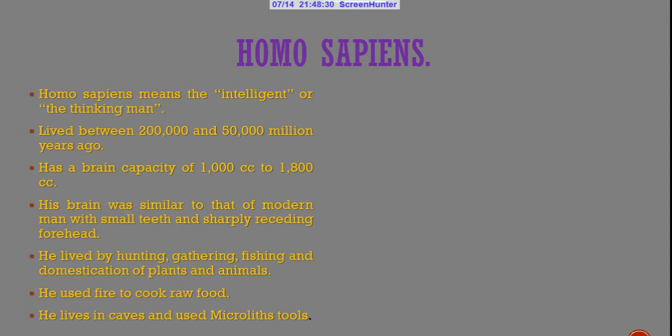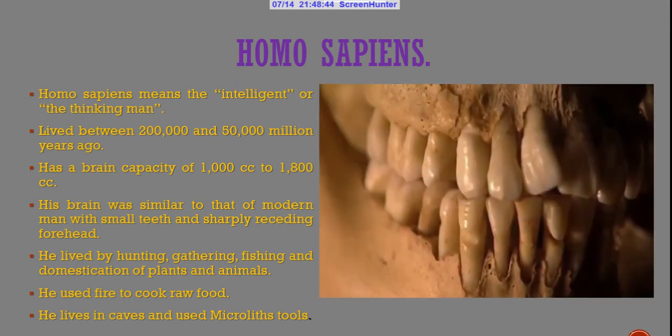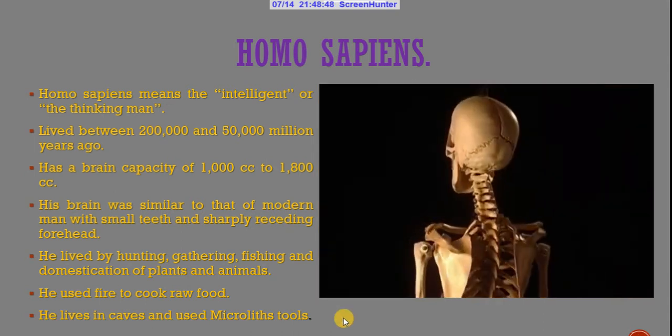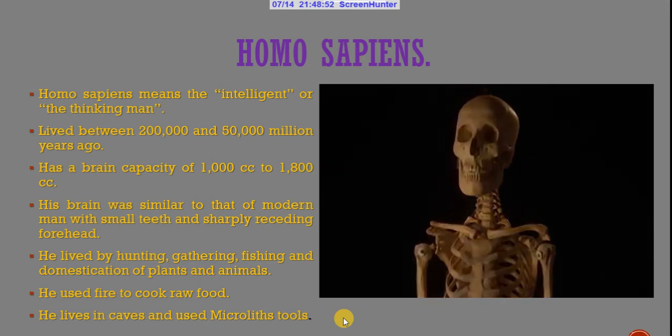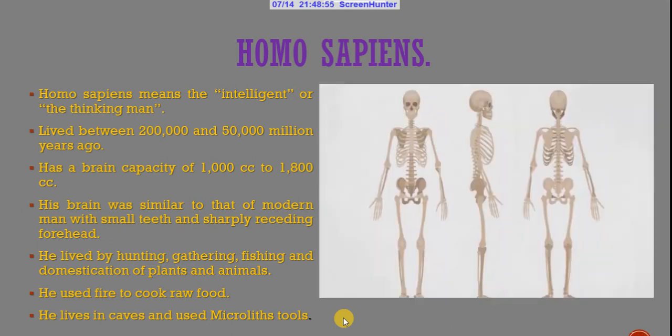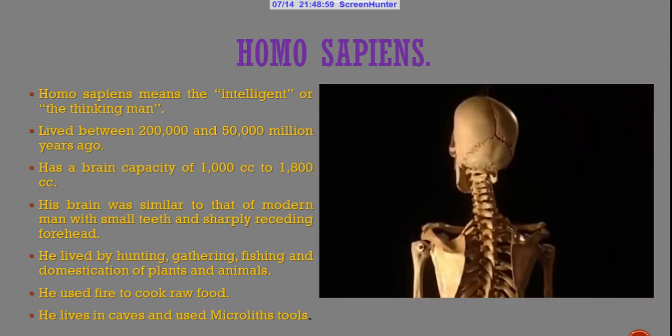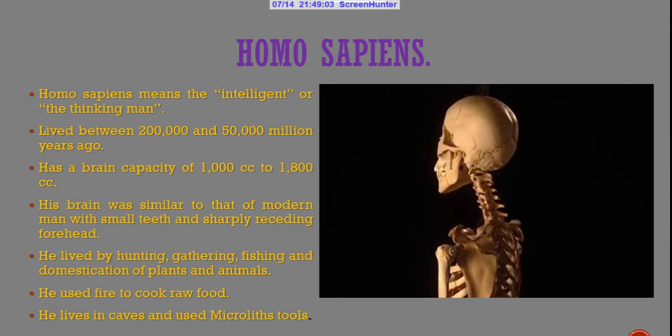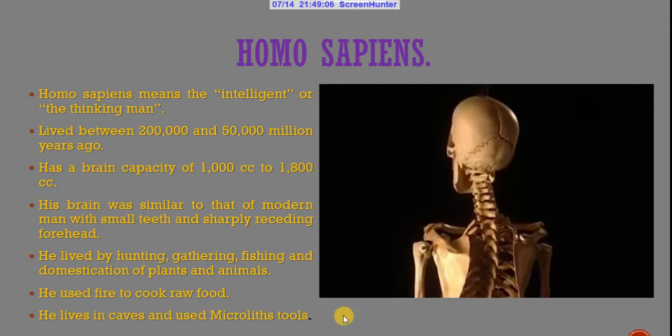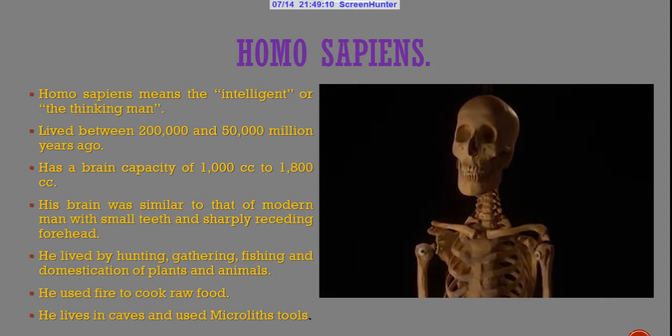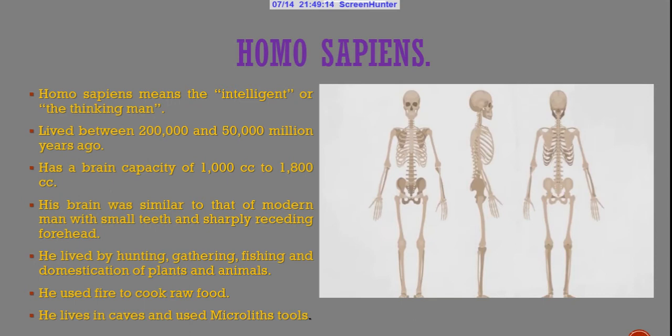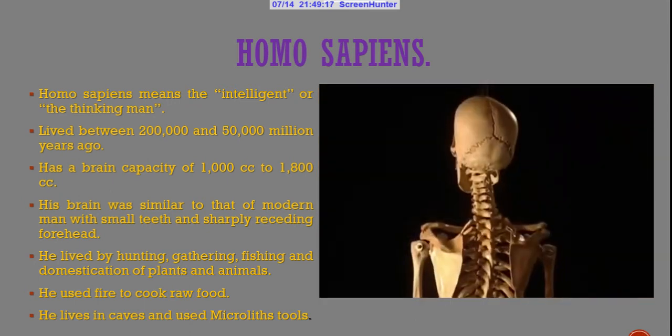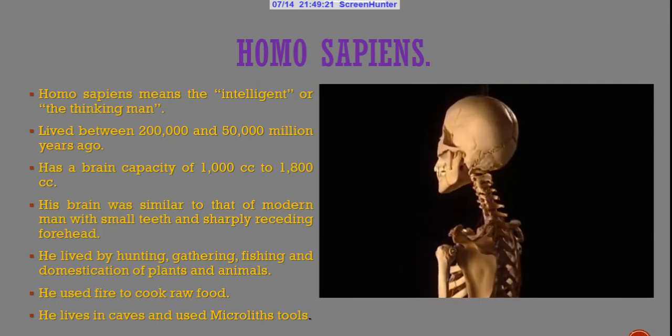Homo sapiens means the intelligent or thinking man. Homo sapiens lived between 200,000 years and 50,000 years ago. Homo sapiens had a brain capacity of 1,000 to 1,800 cranium capacity. His brain was similar to the brain of modern man. He lived by hunting, gathering, fishing, and domestication of plants and animals. He used fire to cook raw food. Homo sapiens lived in caves and used micro tools.